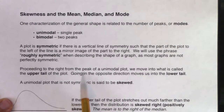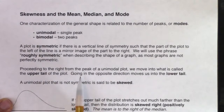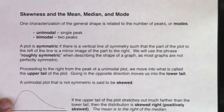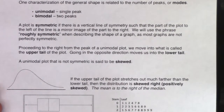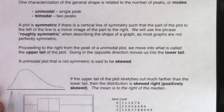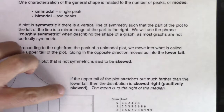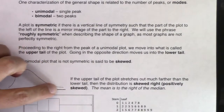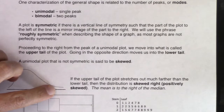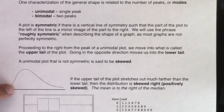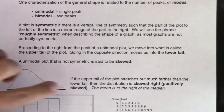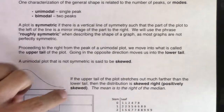Proceeding to the right from the peak of a unimodal plot, we move into what is called the upper tail of a plot. Going in the opposite direction moves us into the lower tail. Your upper tail is the tail of your graph on the high side of the x-axis, and your lower tail is the end of your graph on the low side of the x-axis. So low to high x values: lower tail, upper tail.